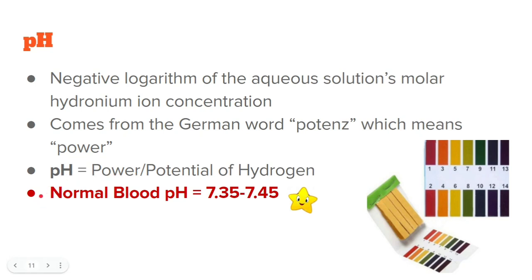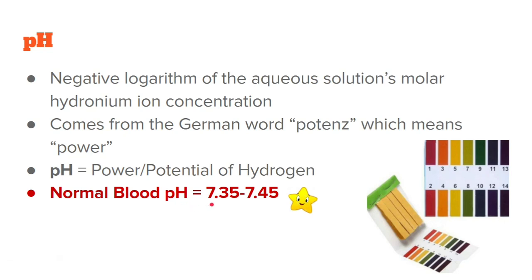A fun fact regarding pH: the normal blood pH of humans is 7.35 to 7.45. Note the star symbol — it means this is a recall question or a related topic in the board exam. In board exams before, it was asked what is the normal blood pH. Please take note: the normal blood pH, which is a recall question in the board exam, is 7.35 to 7.45.